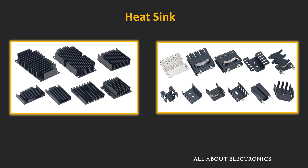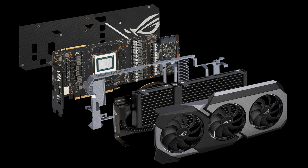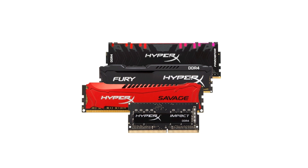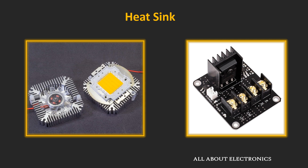Heat sinks are widely used in electronic devices. If we talk about computer peripherals, they are used in graphics cards, CPUs, and sometimes even RAM modules — in high-performance RAM modules, they are used as heat spreaders. They are also used in LED modules as well as in electronic components like high-power MOSFETs and transistors.